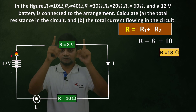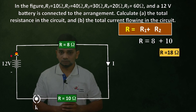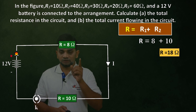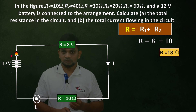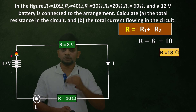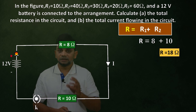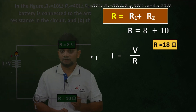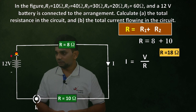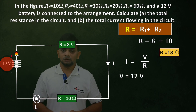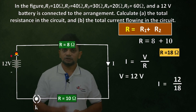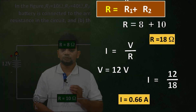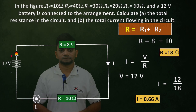For question (b), total current flowing in the circuit: I = V/R = 12/18 = 0.66 ampere. That is the answer.